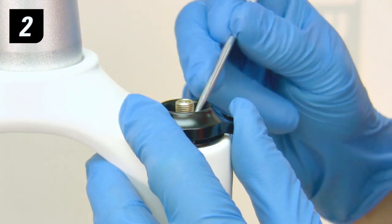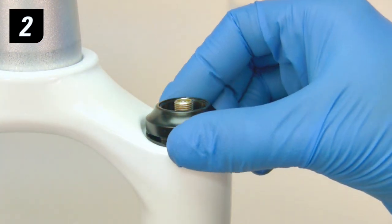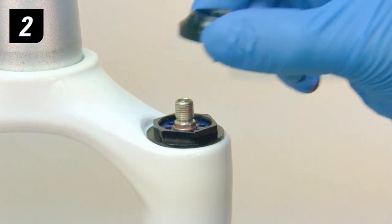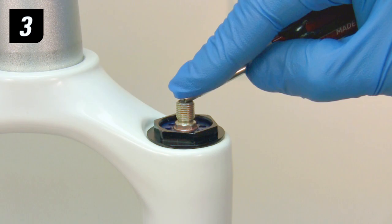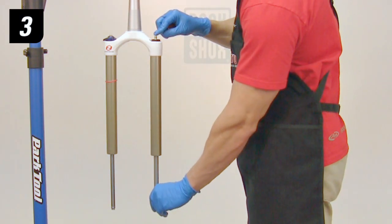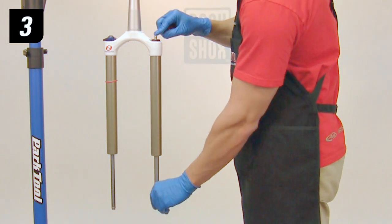Step 2. Use a pick to remove the knob retention O-ring from the inside of the travel adjust knob. Then remove the knob. Step 3. Use the Schrader valve tool to depress the Schrader valve core while pushing the air shaft up and down several times to make sure that all of the air pressure has been released.